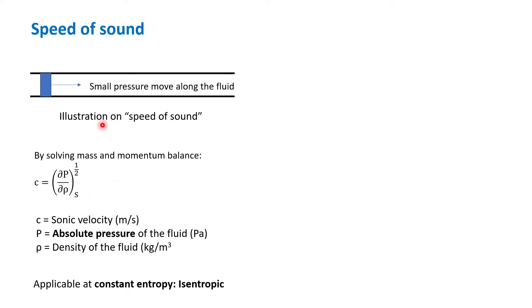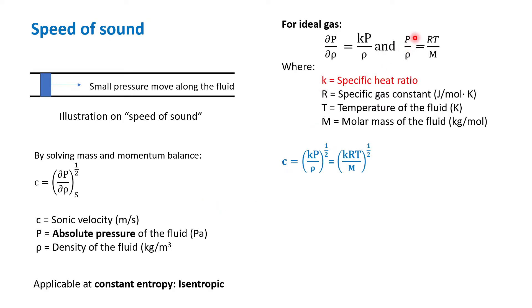This terminology is applicable at constant entropy, or we call it isentropic. Now we insert the definition of the pressure and density from the equation of state, and we end up with this equation that defines the speed of sound. If you look closely into the equation, it is defined by the material itself from the M and k, which is the characteristic of the material.